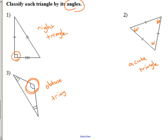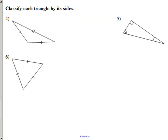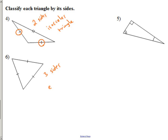Now, if we were to classify a triangle by its sides, tick markings are very helpful. This first triangle has two sides with matching tick marks, meaning they're the same length, but different from the third side — so two sides are the same length, making it an isosceles triangle. Skipping to the next one: all three sides have the same tick marks, so all three sides are the same length — that's equilateral.